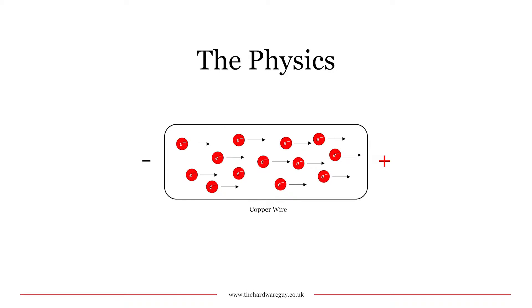Imagine this is a copper wire connected to a positive and a negative terminal. You can see that the electrons are moving toward the positive terminal. This is because they're negatively charged, and just like magnets, opposites attract.